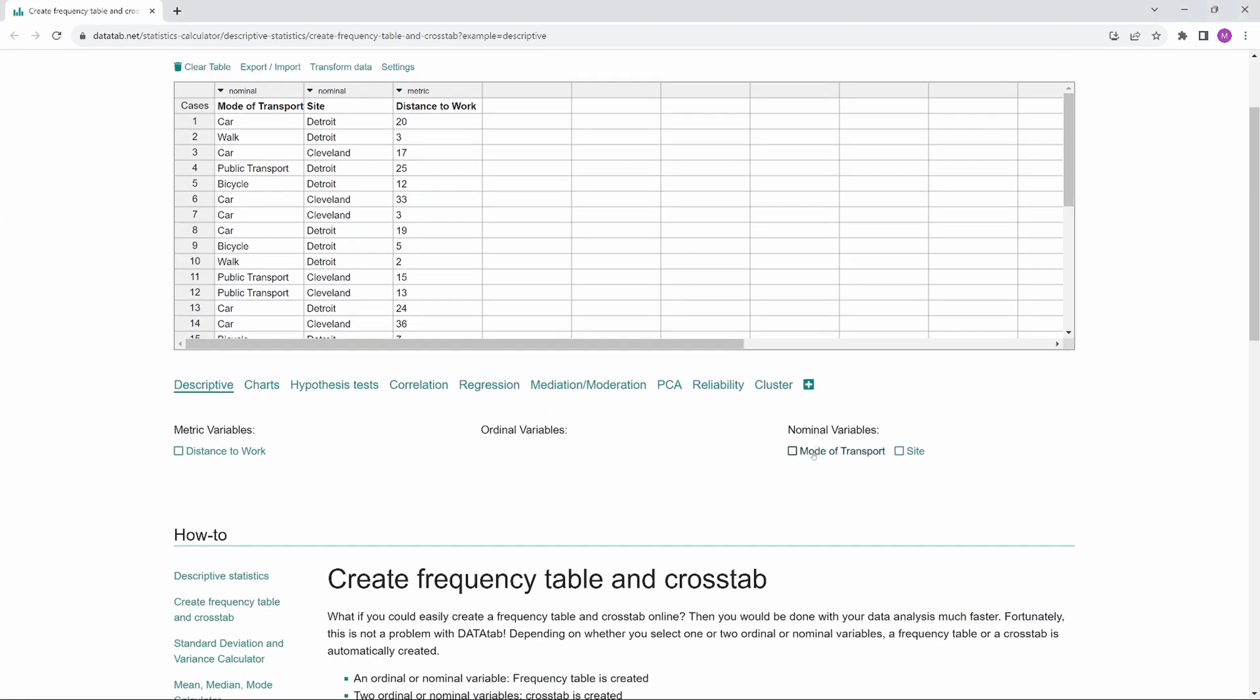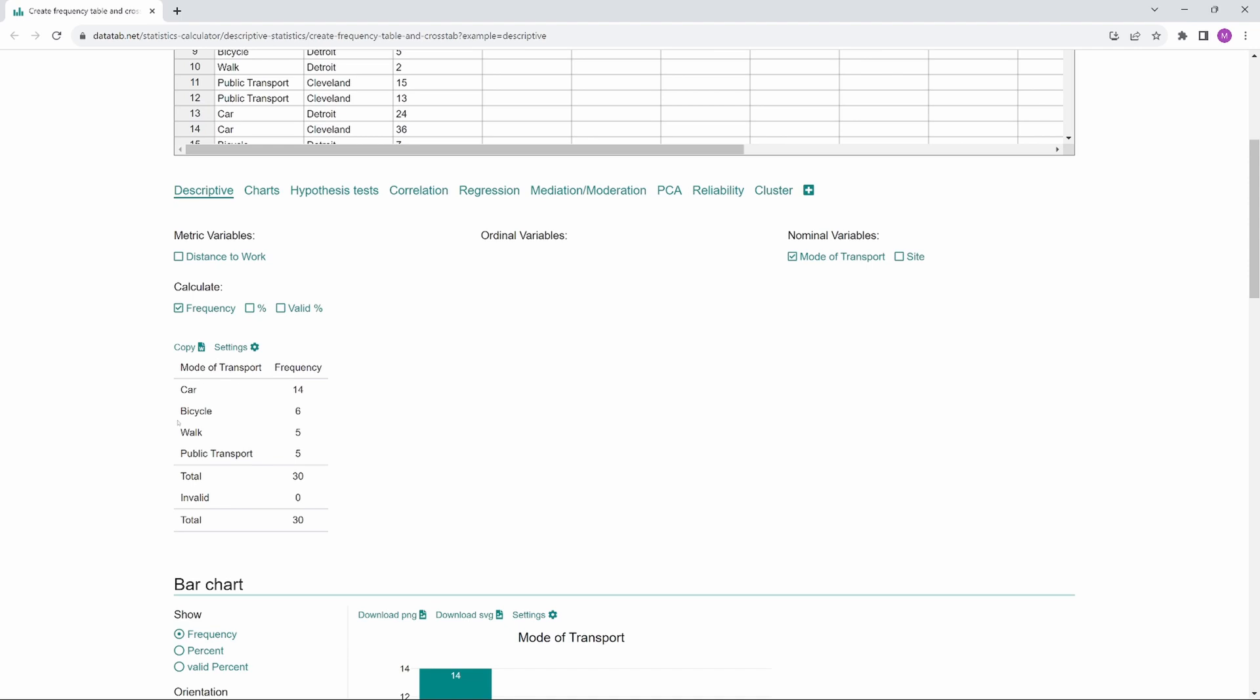Now, if we only click on mode of transport, we get a frequency table and we can also display the percentage values.